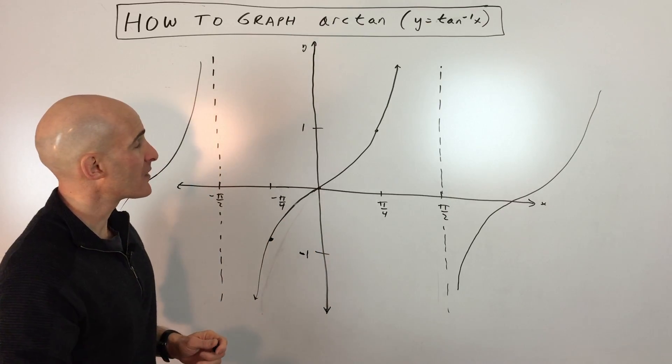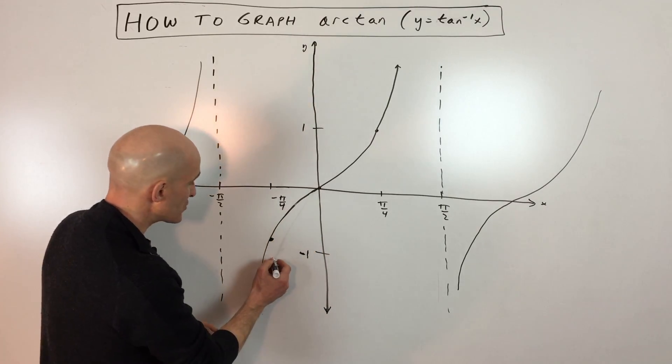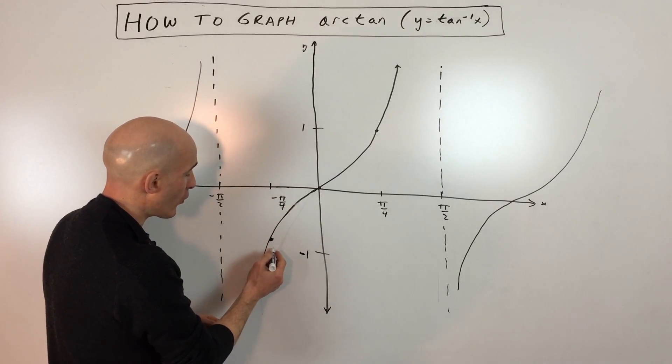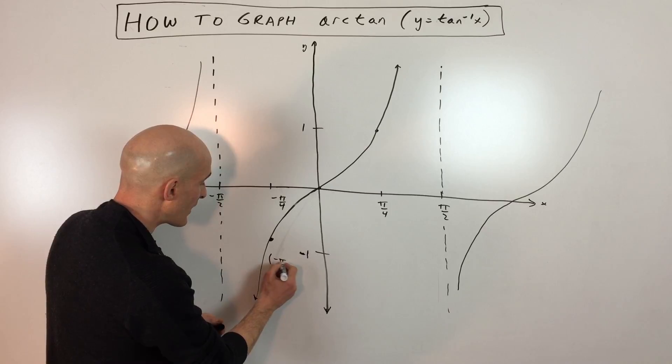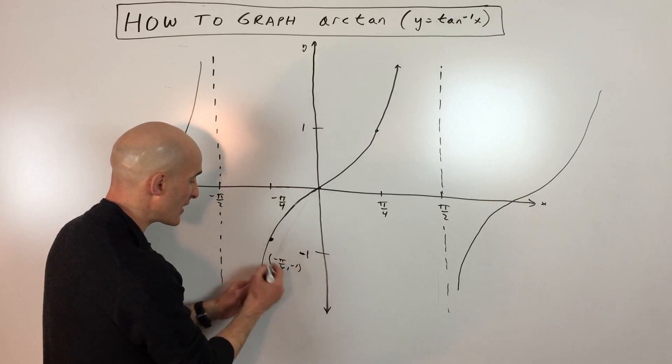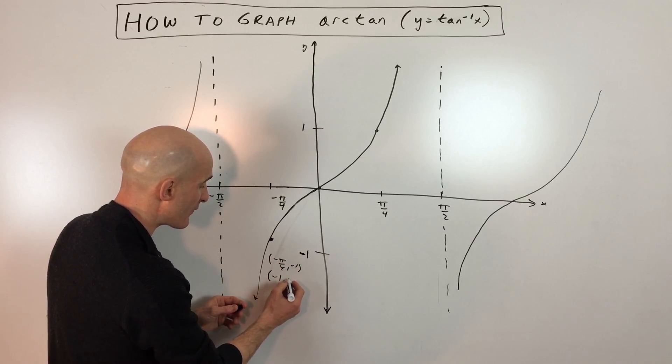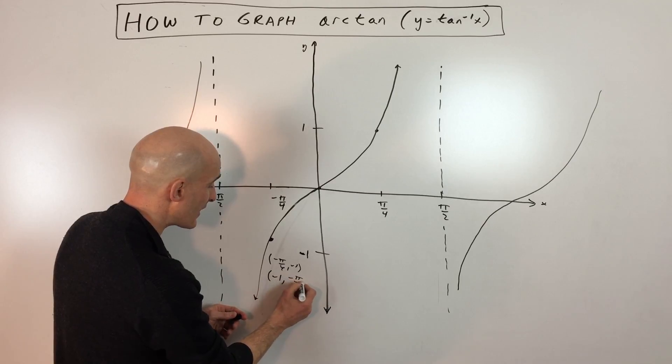Now, the first thing I want to do is just label these points. So this point over here, negative pi over 4 comma negative 1, let's just go ahead and label that. We're going to interchange those values. So now we're going to be graphing negative 1 comma negative pi over 4.